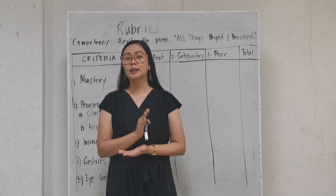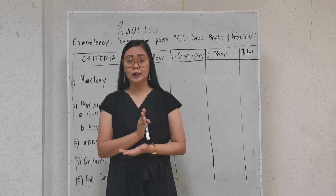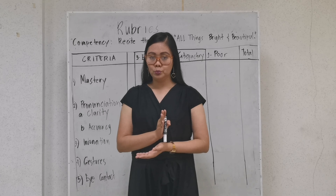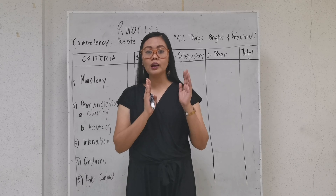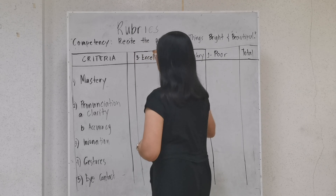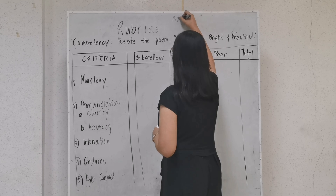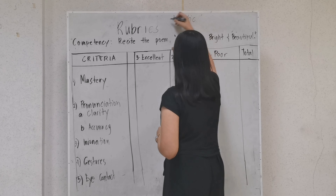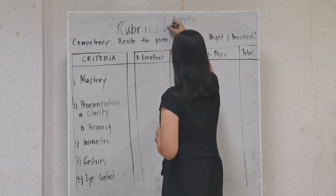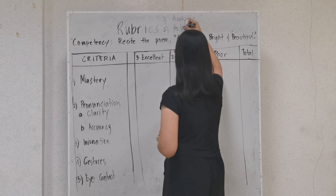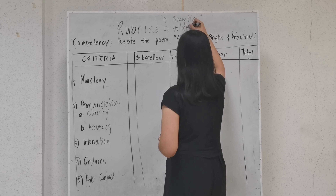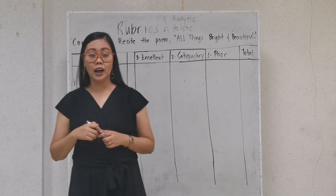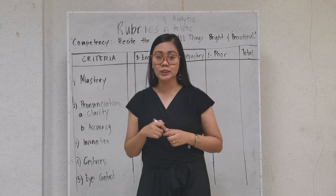Before that, let me discuss the parts and types of rubrics. Remember that there are two types of rubric. The first type is what we call analytic, while the second one is called holistic. There are two types of rubric: one is analytic, the other one is holistic.